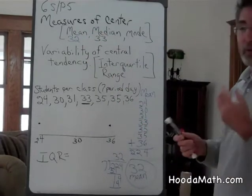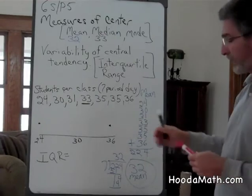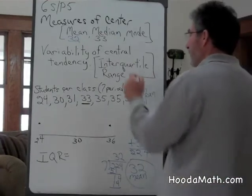The mode is the most frequent number seen in a set of data, and that would be 35.